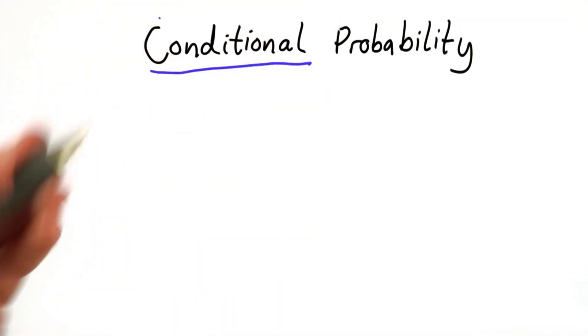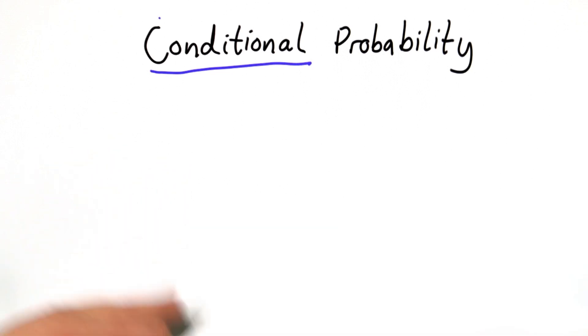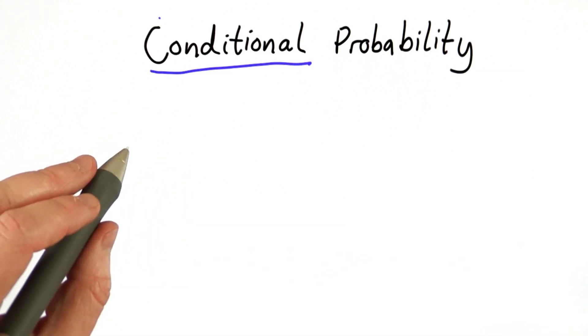The next concept I want to talk about is conditional probability, and this is the one we're going to need to use to prove that the one-time pad is perfectly secure.